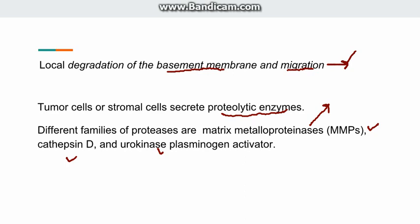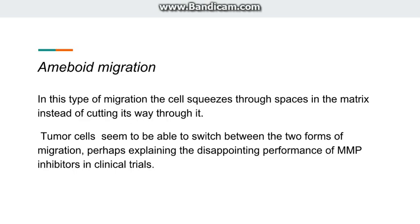For the migration of the tumor, there are two types. First is with the help of these enzymes — they degrade the basement membrane and the extracellular matrix, and the cell moves through it. Second is amoeboid migration, where the cell moves like an amoeba, squeezing through the spaces in the matrix instead of cutting its way through. This also explains why matrix metalloproteinase inhibitors did not work in patients to stop metastasis — because tumor cells can switch between two types of migration. If you give them MMP inhibitors, they will start amoeboid migration.